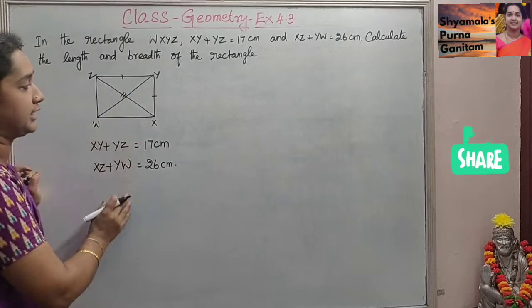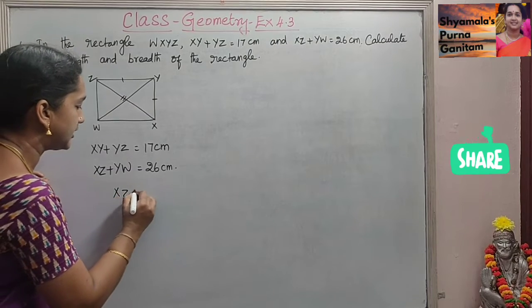You know the property of the rectangle is length of the diagonals is equal. That is, XZ is equal to YW. Length of the diagonals are equal. This is as per the property of the rectangle. So here, instead of this YW, we are going to substitute XZ here. So XZ plus XZ is equal to 26. Since XZ is equal to YW, we will get 2 times of XZ is equal to 26.